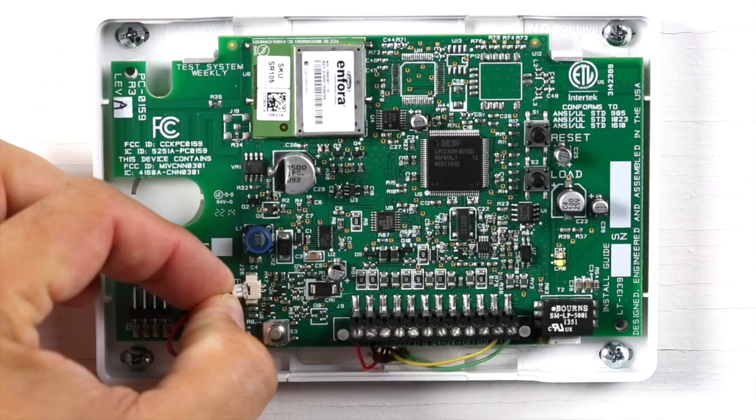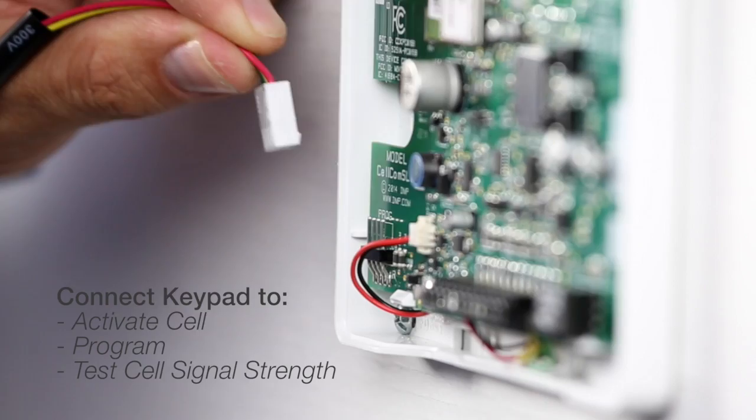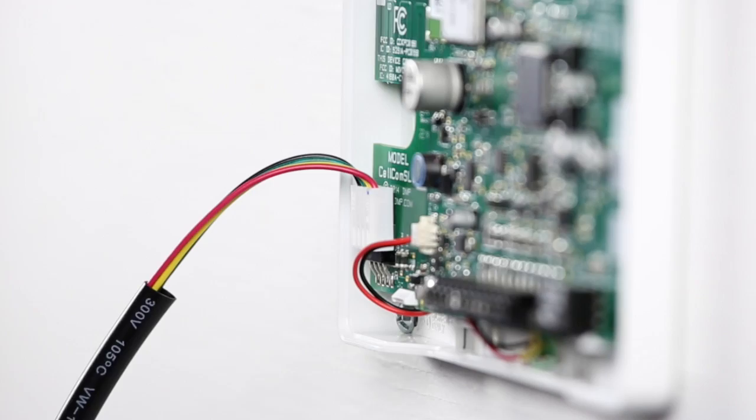Connect the Cellcom SL system battery to the J26 battery header located above the tamper switch. Using a DMP Model 330 programming cable, connect a DMP alphanumeric keypad to the J8 programming header in the lower left corner of the communicator.